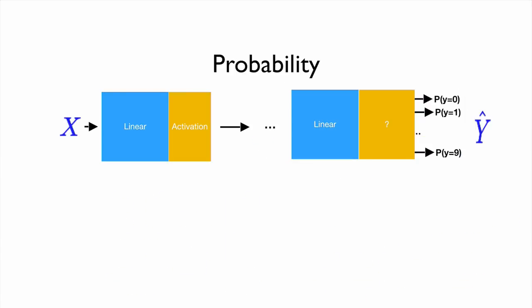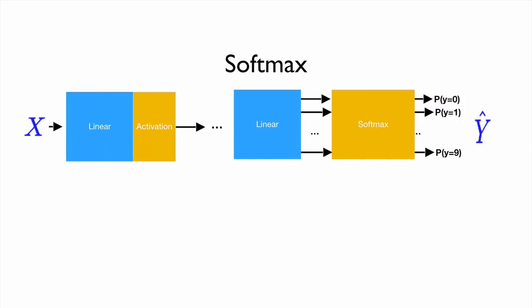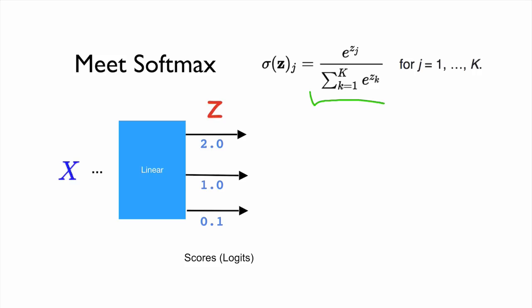The next question is how we are going to make this output represent probabilities. For this, we are going to use a very famous function called softmax. The idea of softmax is that for a given set of numbers, it squashes all the numbers to values between 0 and 1, and the output of the softmax will be the probability of being at that index.